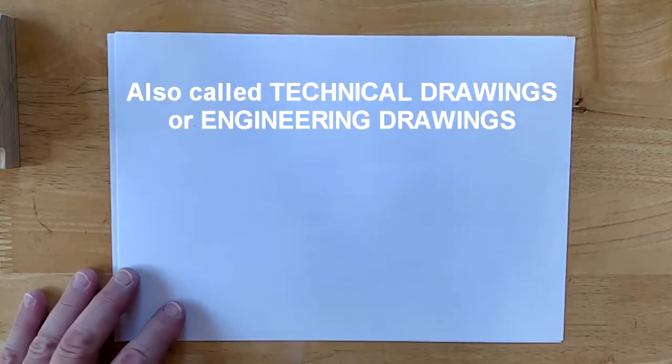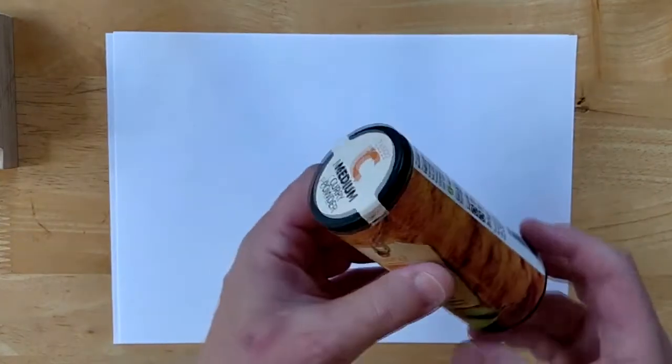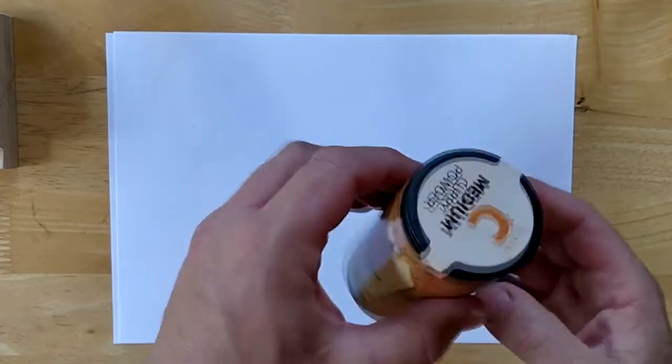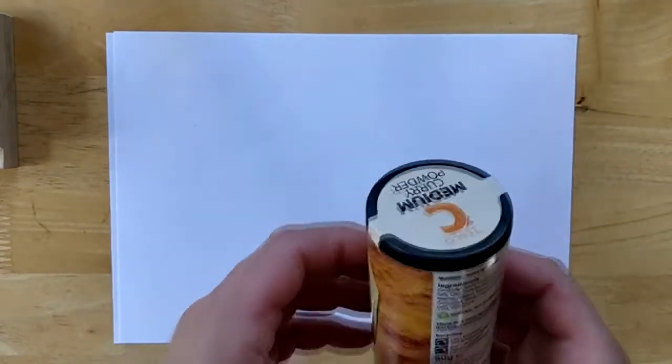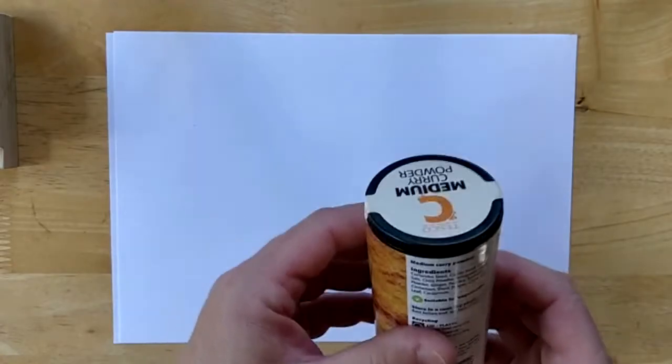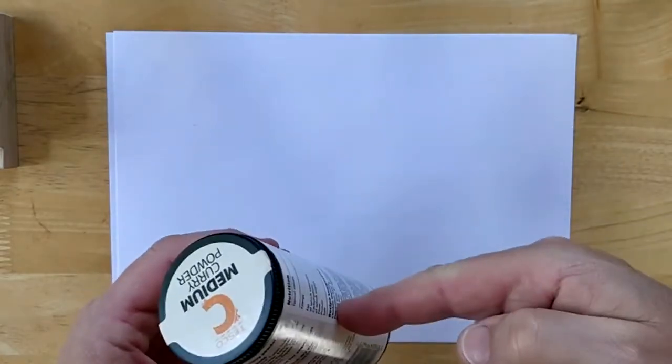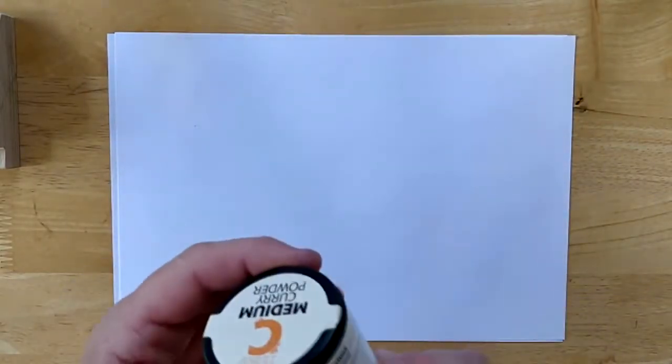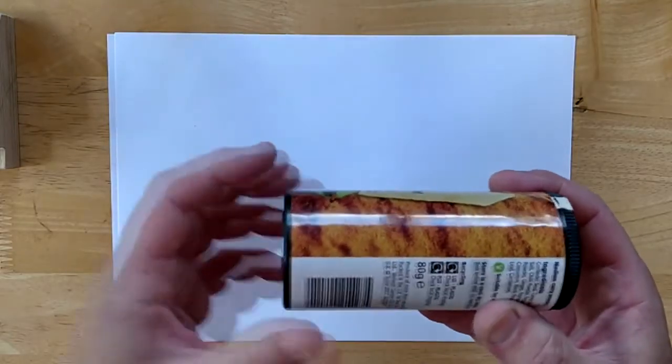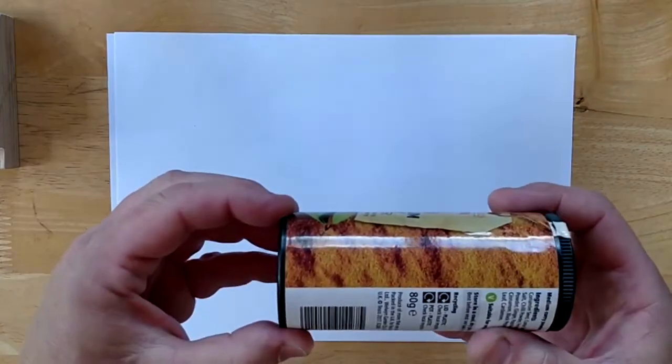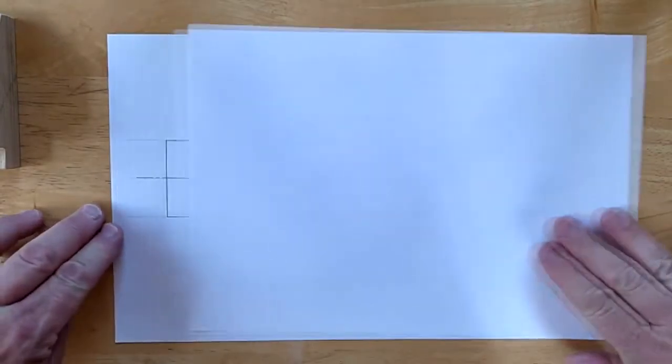I'm going to start by thinking about splitting an object up into two-dimensional views. Something like this cylinder, for instance. We could draw that as a three-dimensional cylinder, but if we were going to have that made, we would want to draw it in two dimensions. So we draw one view looking straight at it from the side, and perhaps a view from the top.